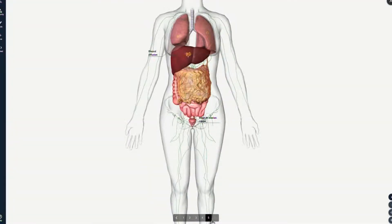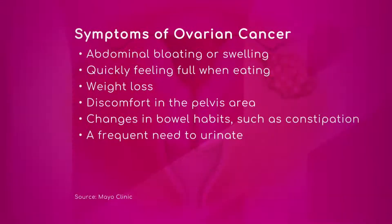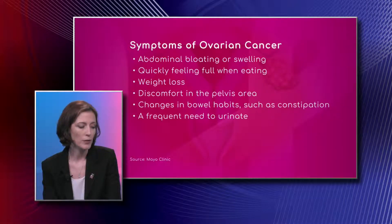Once it's spread into the abdomen, that's typically where we start seeing the symptoms. Stage three is where we'll start seeing symptoms — by that point you're starting to have those digestive issues, and omental caking will often slow down the digestive process. You'll start having abdominal pain, decreased appetite, some patients have weight loss, and if there's fluid buildup in the abdomen they may have some distension — that's when they start becoming really symptomatic.